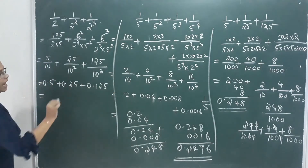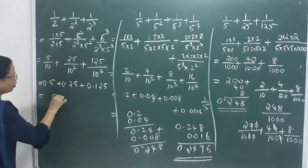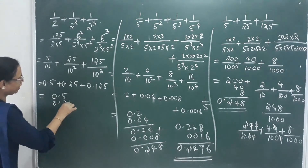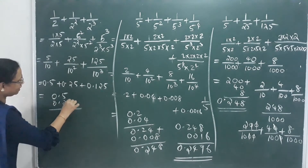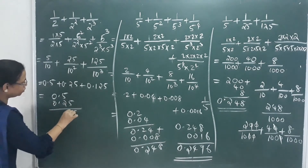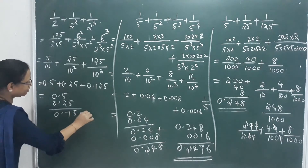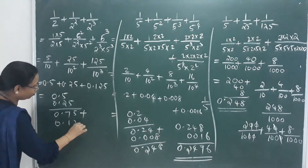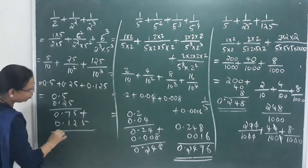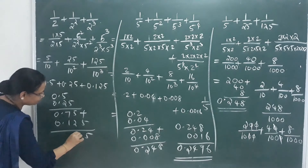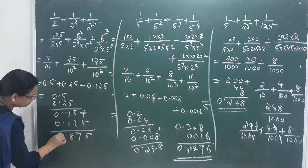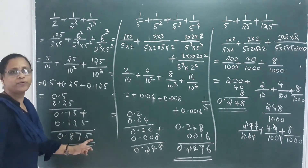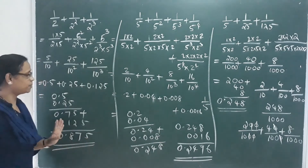So the decimal forms are 0.5, then 0.25, and 0.125. The digits are 5, 7, 8, giving 0.875.